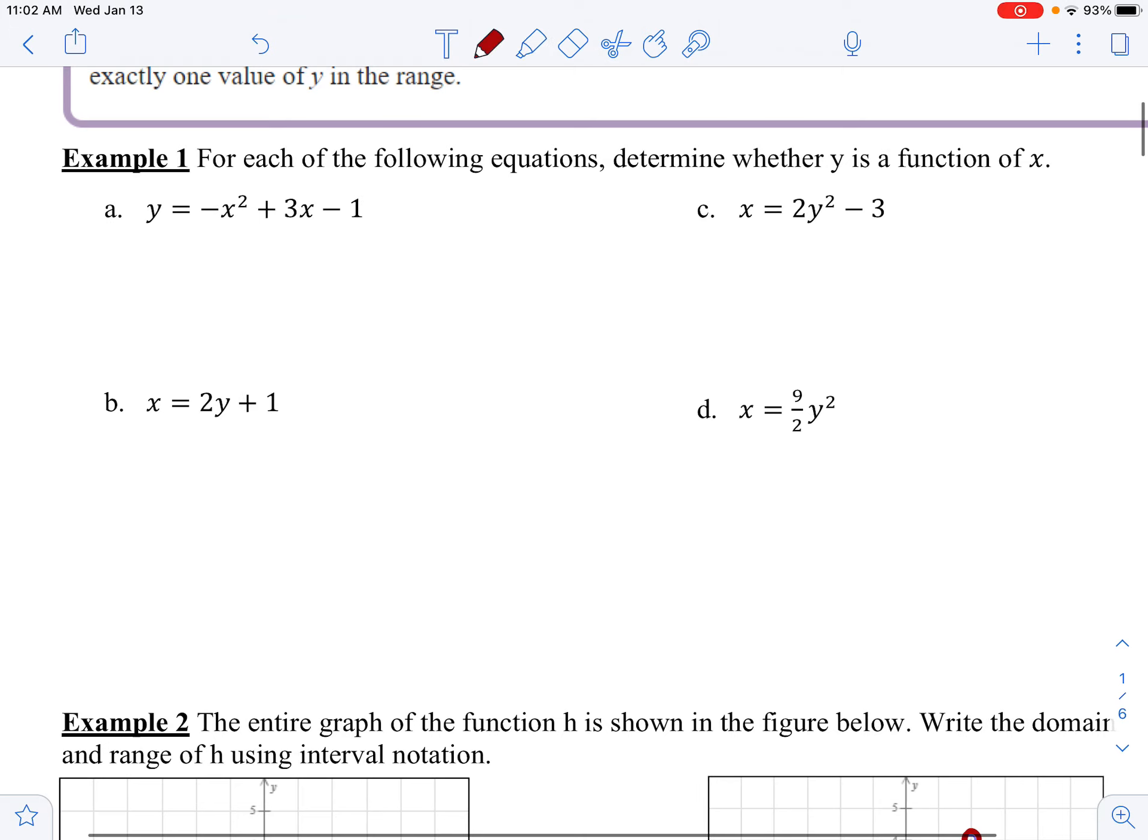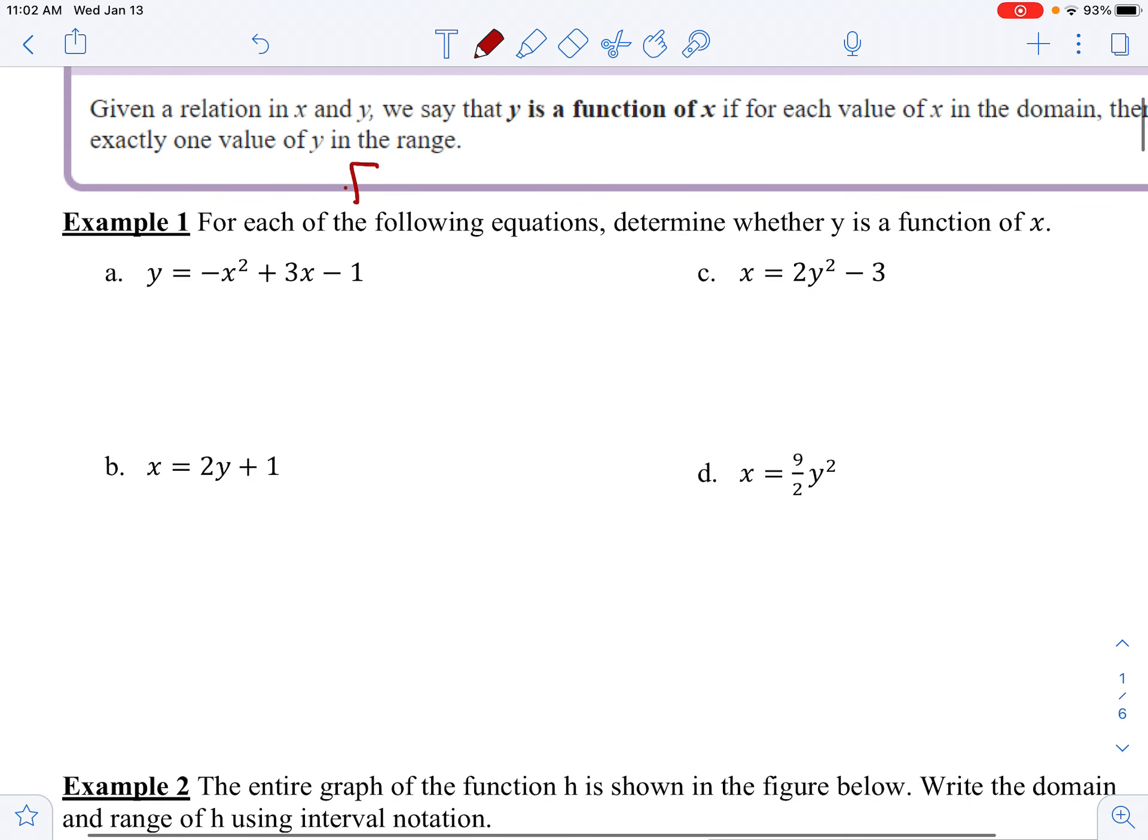If you have the equation, what you will have to do is step number one first. First, solve for y. Let's take a look at the first one. Well, the first one is already solved for y, so we don't have to do extra work. It says y equals negative x squared plus 3x minus 1. Is this a function? Yes, it is. In fact, this is a special function. What kind of function is this? It's a squaring function, and we call this a quadratic function.